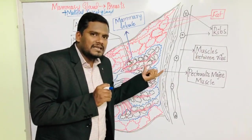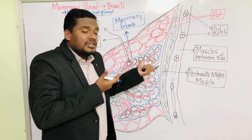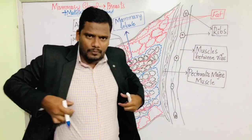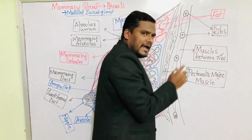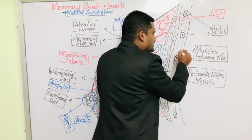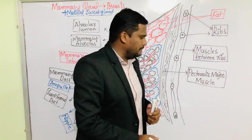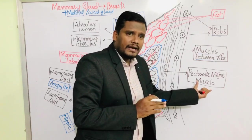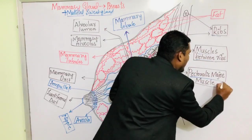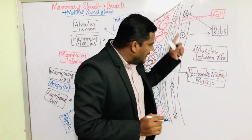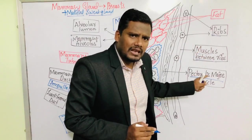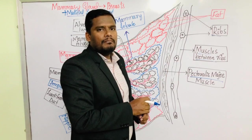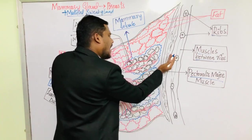These mammary glands are present at the chest region. Here we have the ribs, and between the ribs there are muscles. After the ribs we have a particular muscle called the pectoralis major muscle. This pectoralis major muscle is present between the rib cage and the mammary glands.